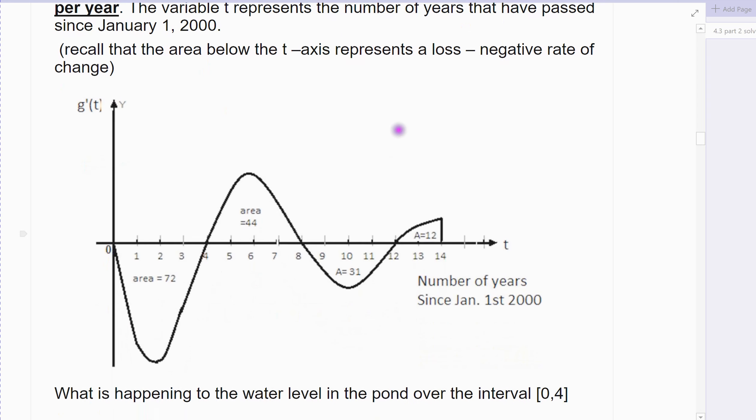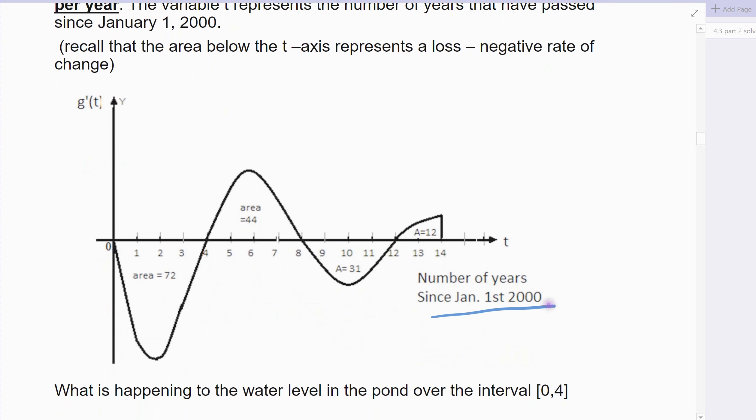So here's the graph. Remember, this is the years from 2000 to 2014, because it's 14 where it stops. This g prime of t, I've got to remember it's in thousands of gallons of water per year. That's the rate at which gallons are changing. Some years you have more rainy season, some years there are droughts, and so sometimes the pond goes up, sometimes it goes down, and this would be the graph that reflects that.